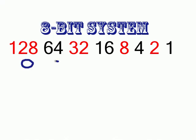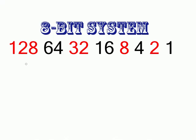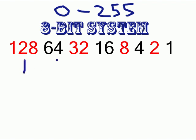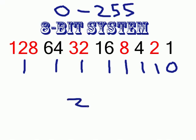How do you get 0? Easy — just put 0 for everything: all zeros. And the maximum value in an 8-bit system is all ones: 128 + 64 + 32 + 16 + 8 + 4 + 2 + 1 = 255. If you want 254, just change the last 1 to 0: 128 + 64 + 32 + 16 + 8 + 4 + 2 = 254.